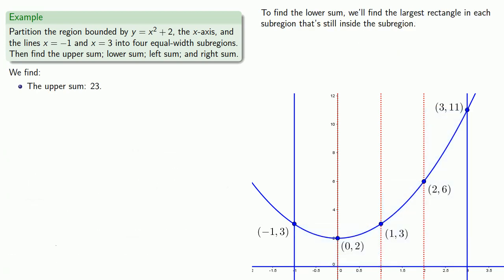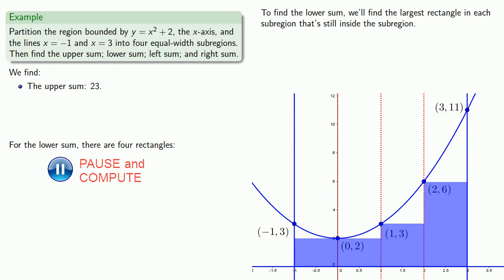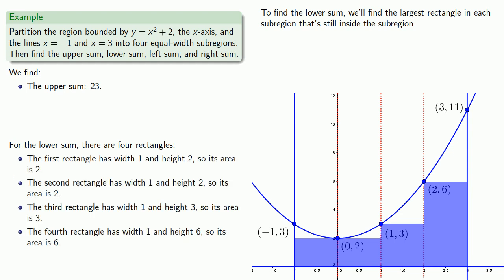Next, to find the lower sum, we'll form the largest rectangle in each region that's still inside the sub-region. So we might imagine starting in the region and expanding until we run out of region. And we find the areas of each of these rectangles. Once we have those areas, we can add them together to form the lower sum.